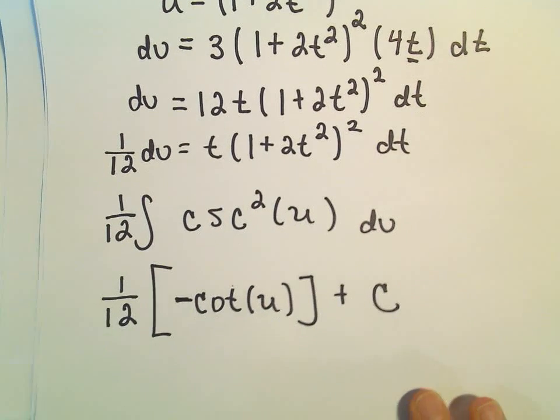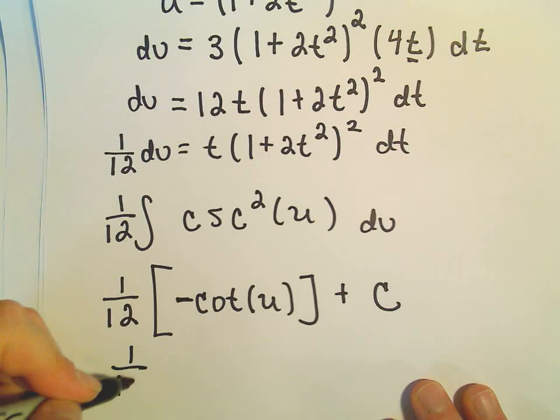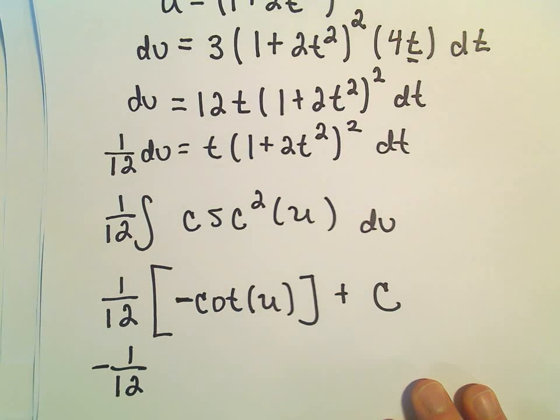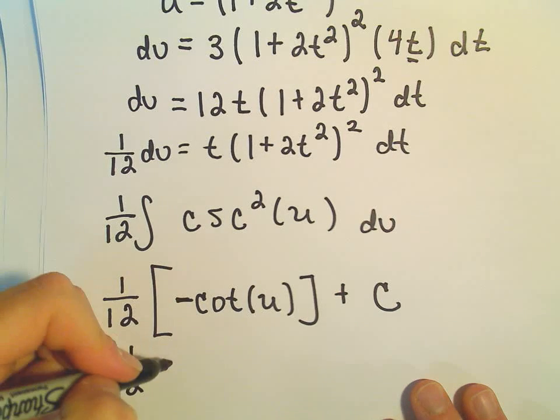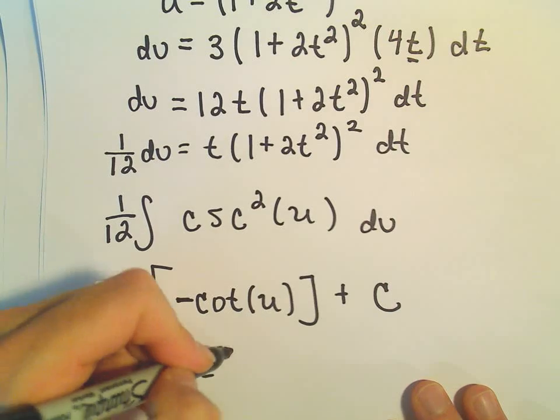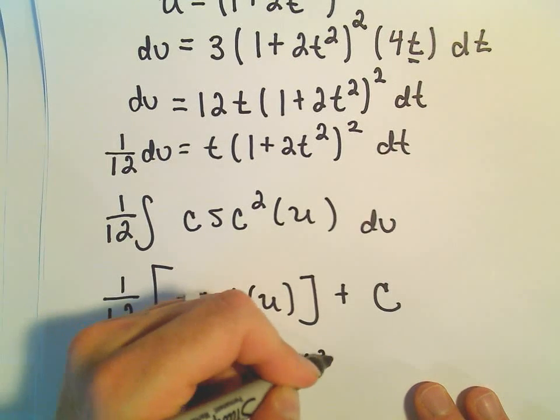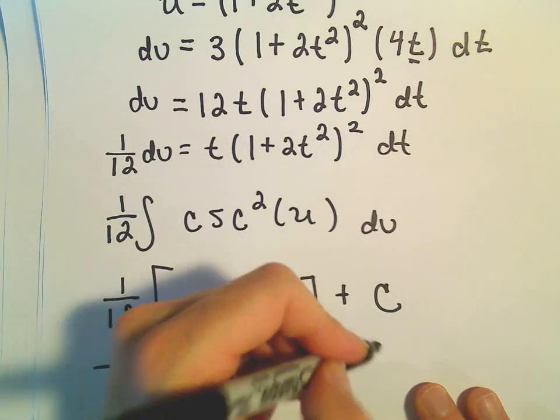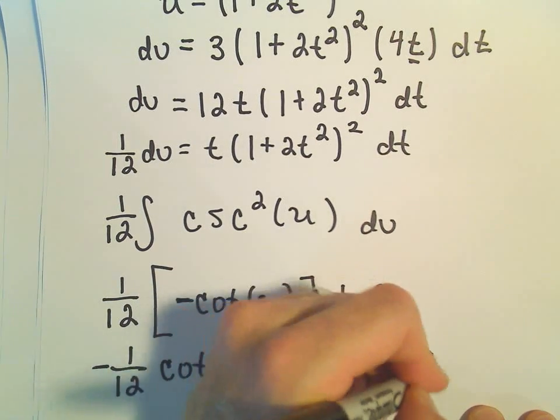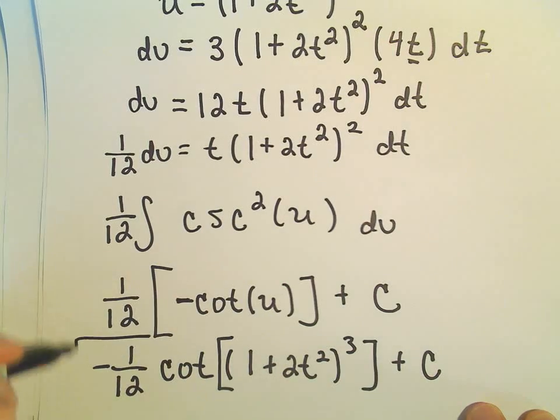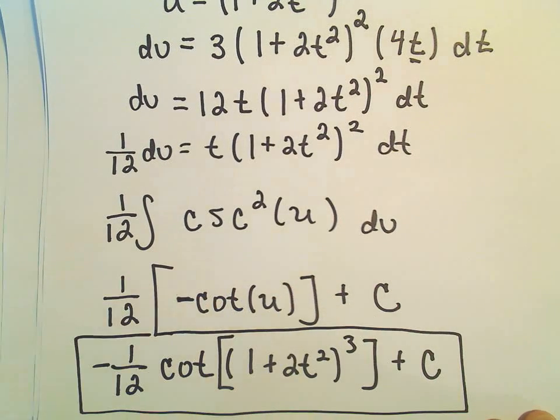Plus C. And now I can just plug our u back in. I'm going to pull the negative out front, so we'll have -1/12 times cotangent of u, which is (1 + 2t²)³, plus C. And now we have found our antiderivative.